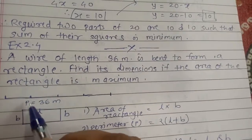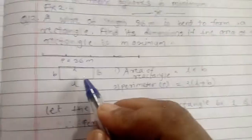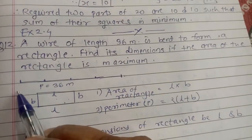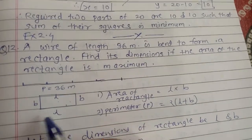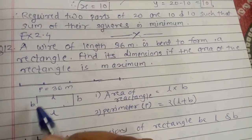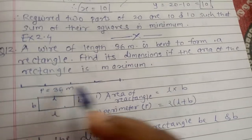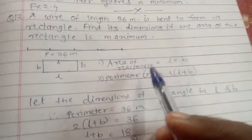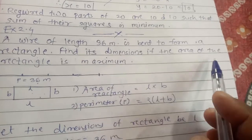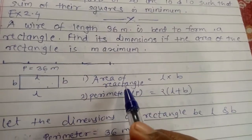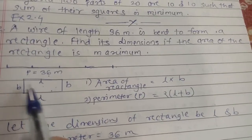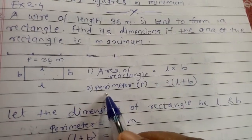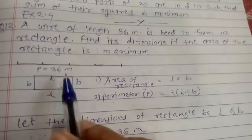The wire is bent and converted into a rectangle, so the total length of 36 meters represents the perimeter of the rectangle. This perimeter equals 36. The area of the rectangle is length into breadth, and the perimeter is equal to the sum of four sides: l plus b plus l plus b, that is 2l plus 2b, or taking 2 common, 2(l + b).